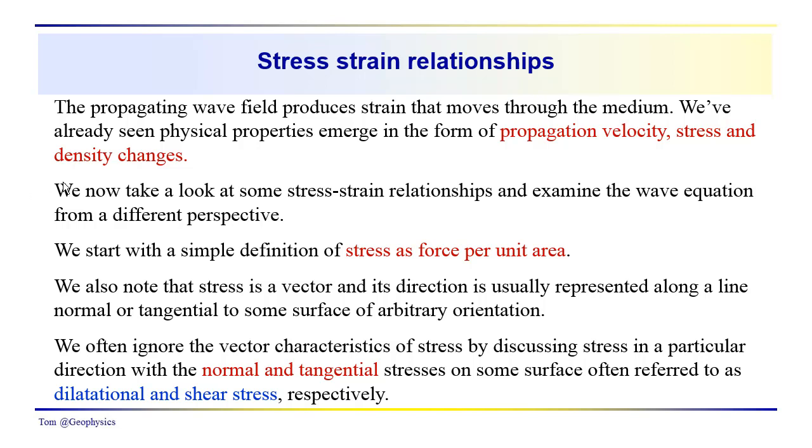So this is a different perspective that we're going to take. We're going to look at these stress-strain relationships. We see relationships to propagation velocity, stress in the form of tension, and density changes. Now we're going to look at it in a stress-strain perspective. Stress is force per unit area. It's actually a vector. The vector attributes are often not specifically noted, but we do have normal and tangential components on any particular face or cut through an object. These are sometimes referred to as dilatational and shear stress directions.